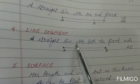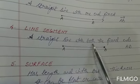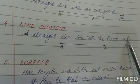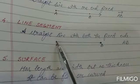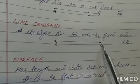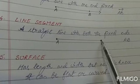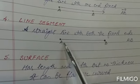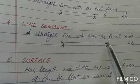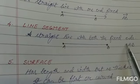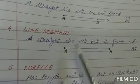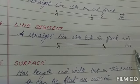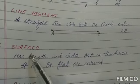The next term is a line segment. A line segment is a straight line with both endpoints fixed — point A is fixed and point B is fixed. I can extend it neither in this direction nor in the other direction; it is fixed from both sides. It is simply represented as AB.